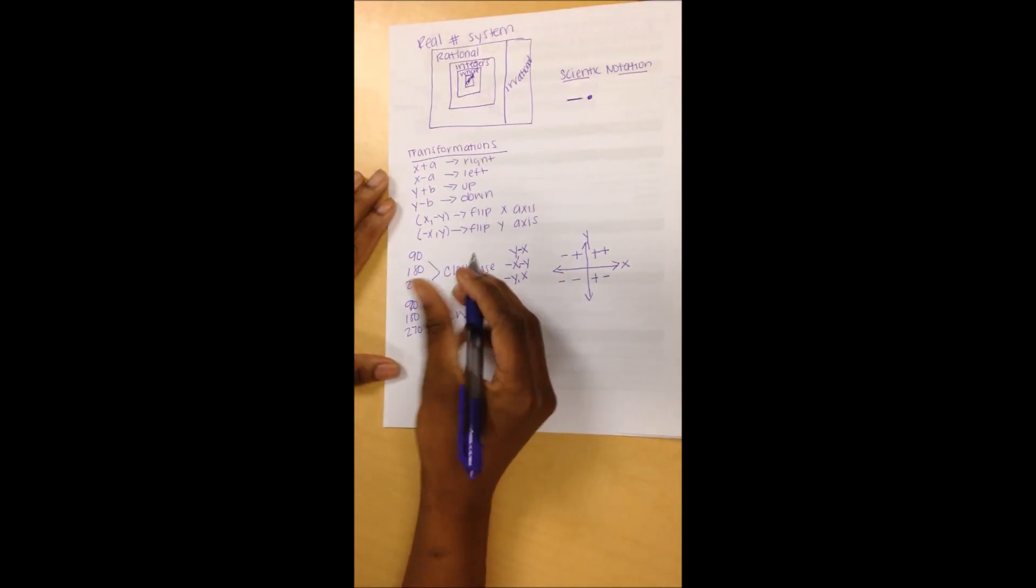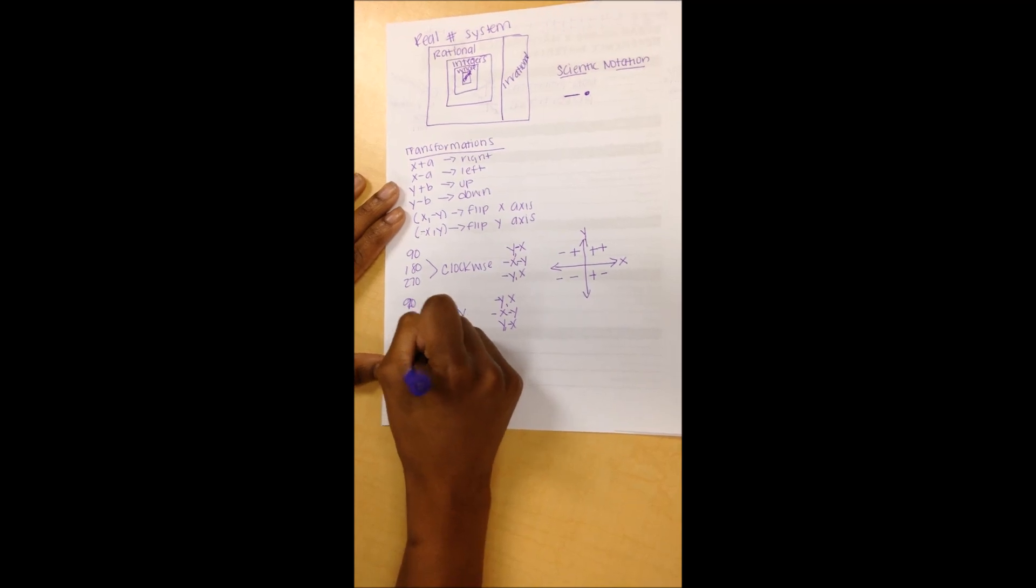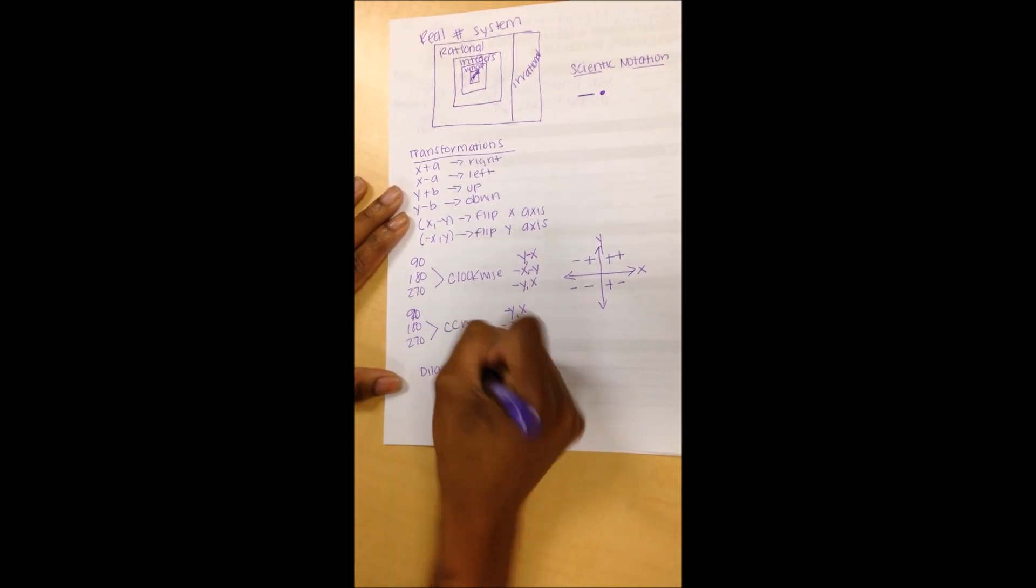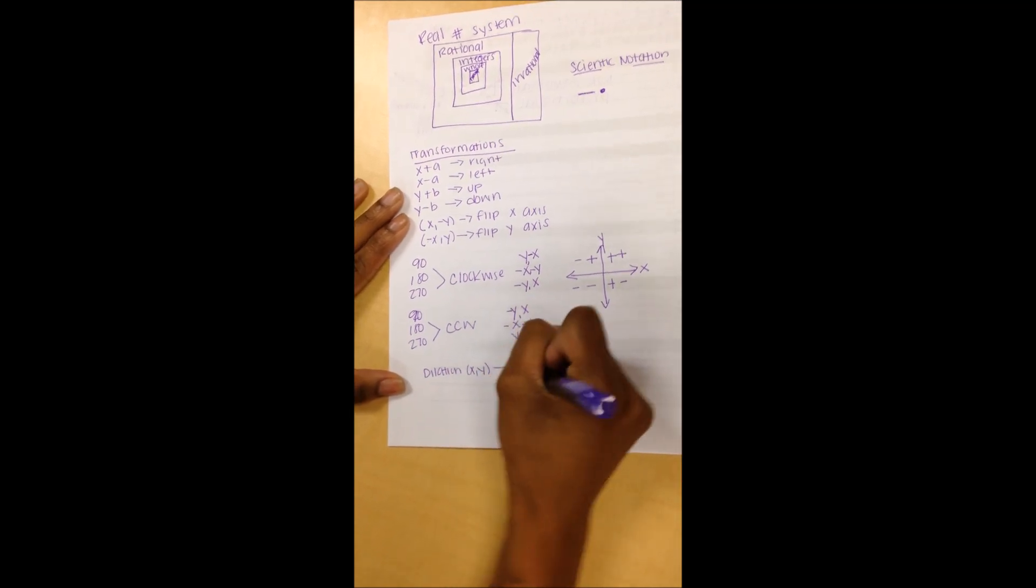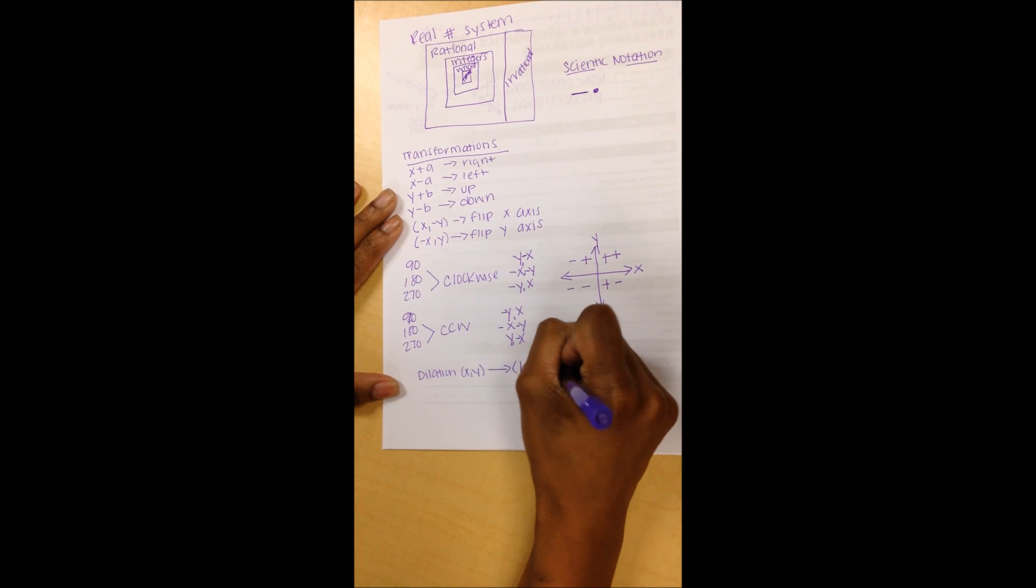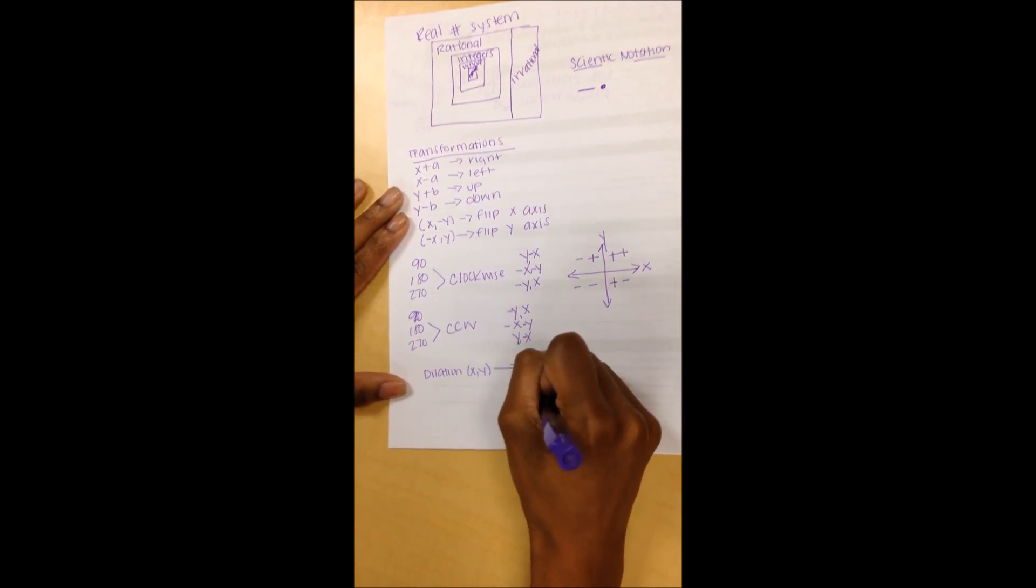A few more pointers. Along with your transformations, you also need to write your dilation, which is xy yields kx, ky, where my k is my scale factor.